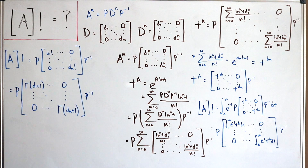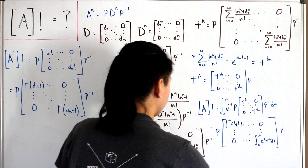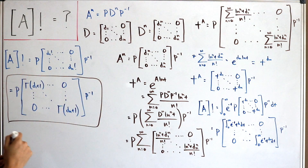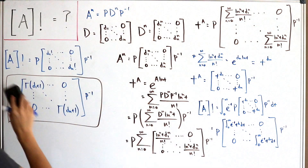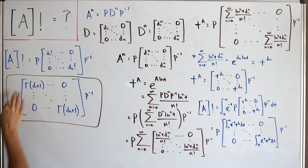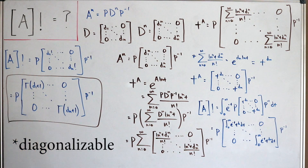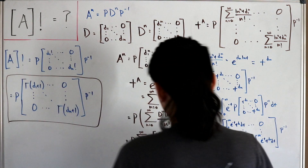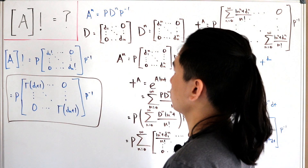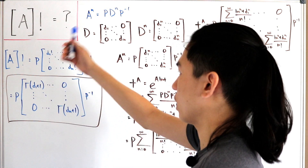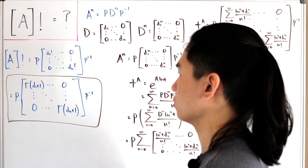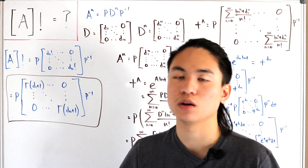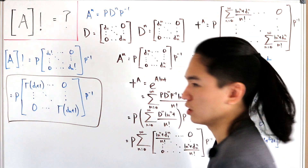We've found the closed form of the factorial of a diagonalizable matrix A. As an interesting note, if you plug in the zero matrix, you get the identity matrix as the result, since all diagonal entries are 0, giving gamma(1) equals 1 for each diagonal entry, which reconstructs the identity matrix. Pretty cool!